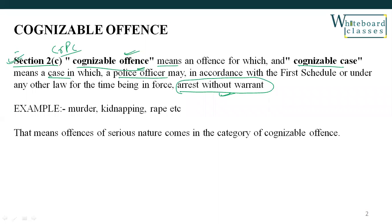Now, how do we know which offences are cognizable and which are not cognizable? CRPC's first schedule has a list of offences and clearly states which offences are cognizable and non-cognizable. But generally, offences of a serious nature fall in the category of Cognizable Offences. Police have the power to arrest without warrant because these are serious offences — for example, if someone has committed a murder, there are high chances of the accused trying to flee.